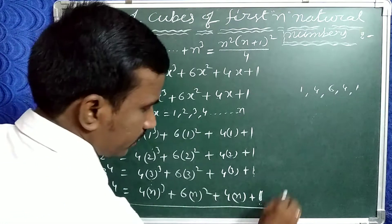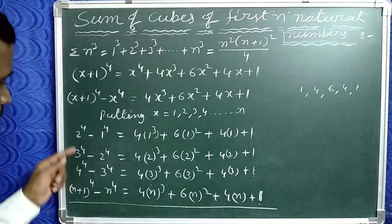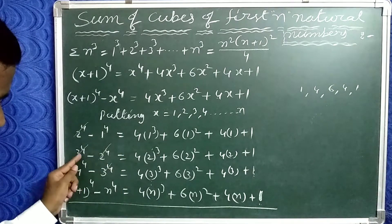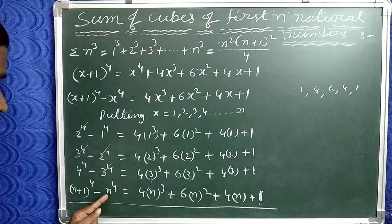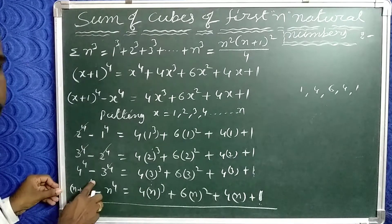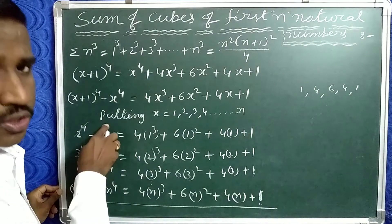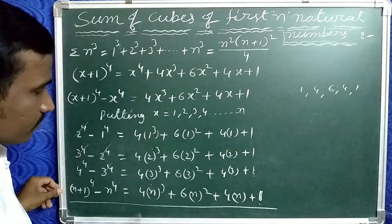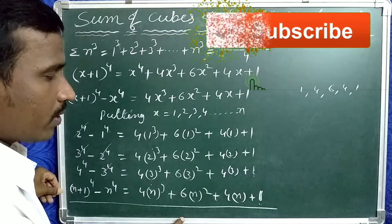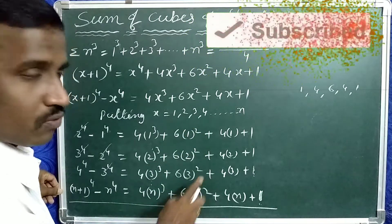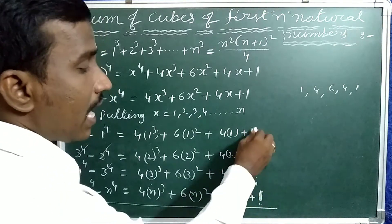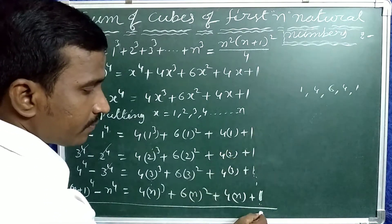Now add all these terms. When we add, 2 power 4 cancels, 3 power 4 cancels — these two terms are cancelled. Similarly, these two terms are cancelled. n power 4 and the preceding n power 4 also cancel. The rest of the terms are: n plus 1 whole to the power of 4 minus 1 to the power of 4. On the right-hand side, take 4 common: 1 cube plus 2 cube plus 3 cube plus so on. Take 6 common: 1 square plus 2 square plus 3 square plus 4 square and so on. Take 4 common: 1 plus 2 plus 3 plus so on. And 1 is adding with itself n times, so that value will be n.